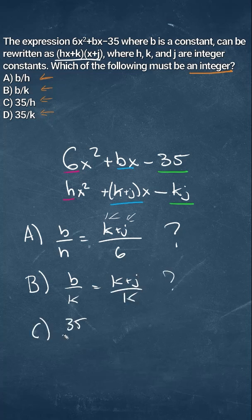For C, it's going to be 35/h, and we know h is going to be equal to 6, but that's not going to be an integer so it can't be that.